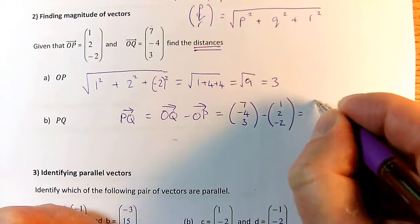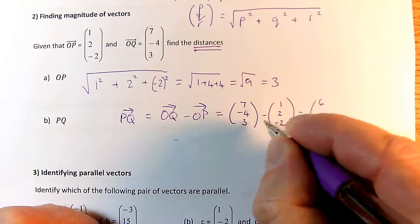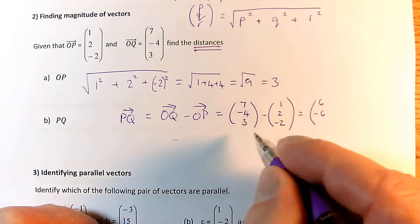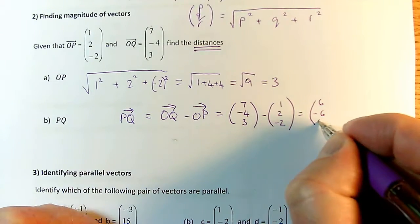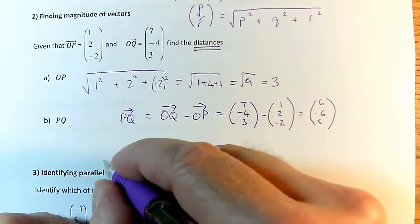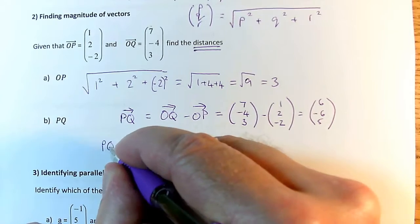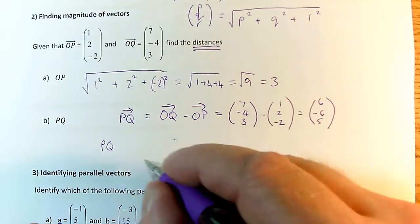And I'm going to get 7 minus 1 is 6. And minus 4 take away 2 is minus 6. And 3 take away minus 2 is plus 5. So therefore, my distance PQ is the magnitude of that.